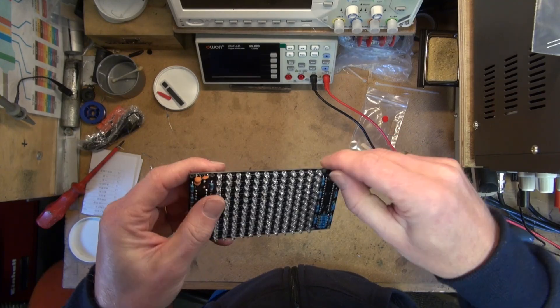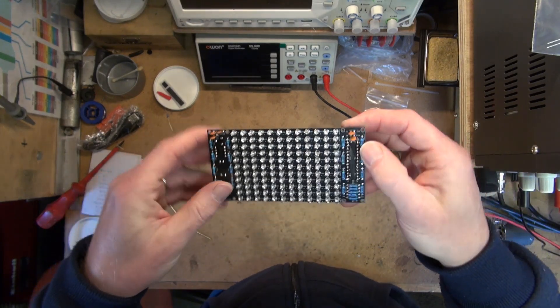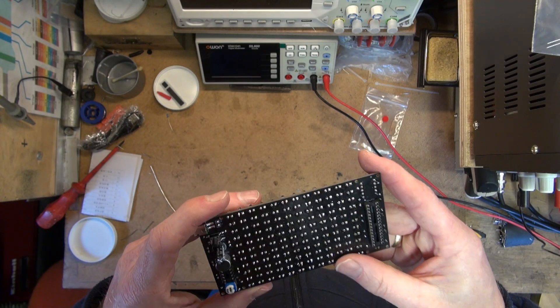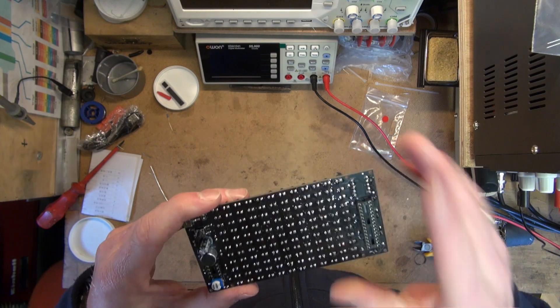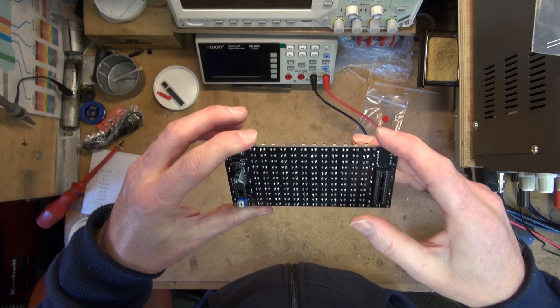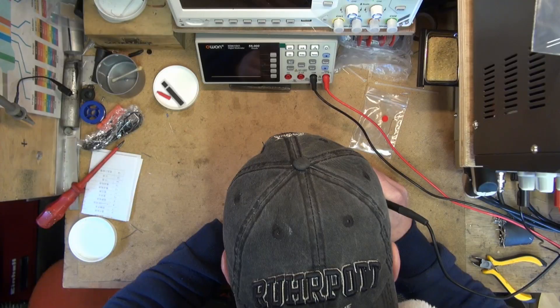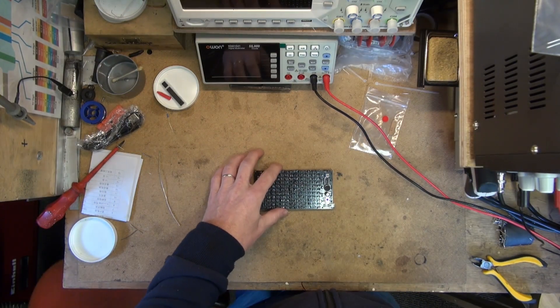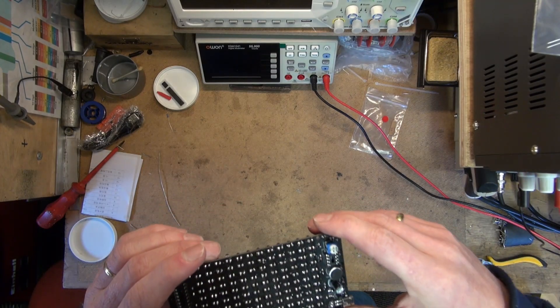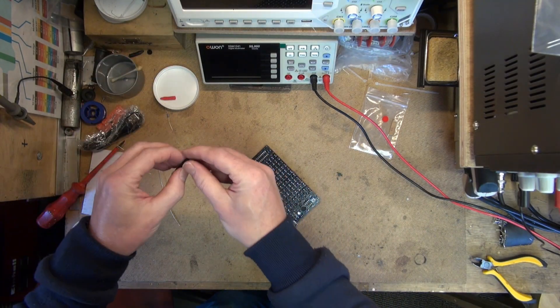Well, that means that all components are now soldered on. So the next thing to do is install the ICs. Let's see if everything is the way it should. One thing that I'm going to do before I install the ICs is I'm going to go over all the joints. And that's the last one. Clean up my soldering iron. Now let's install the ICs and see if this thing will work.